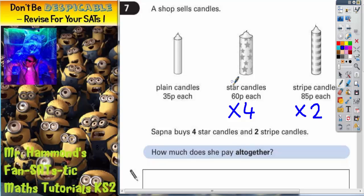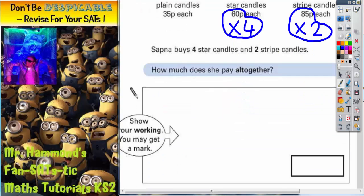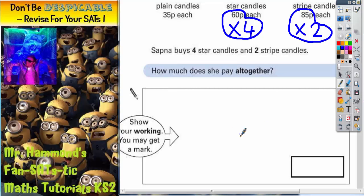Well it's pretty obvious what we're going to have to do. We're going to have to do 60p times four, and then we're going to have to do 85p times two, and then we're going to have to add those two answers together to get the total cost. So let's scroll down to see where we're going to do our working out.